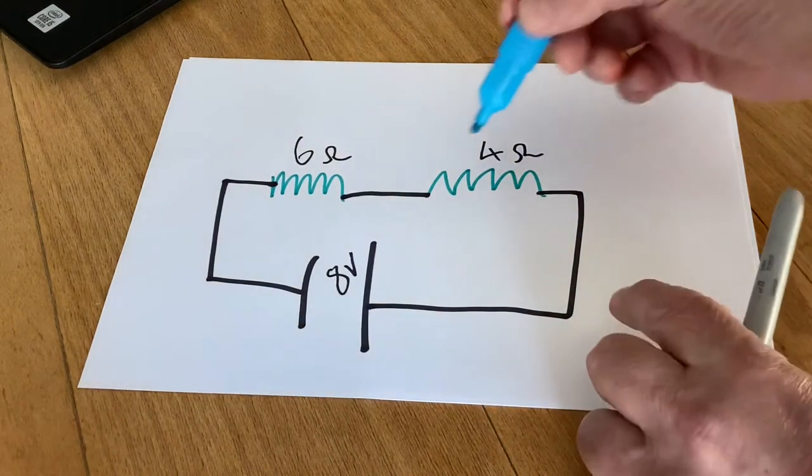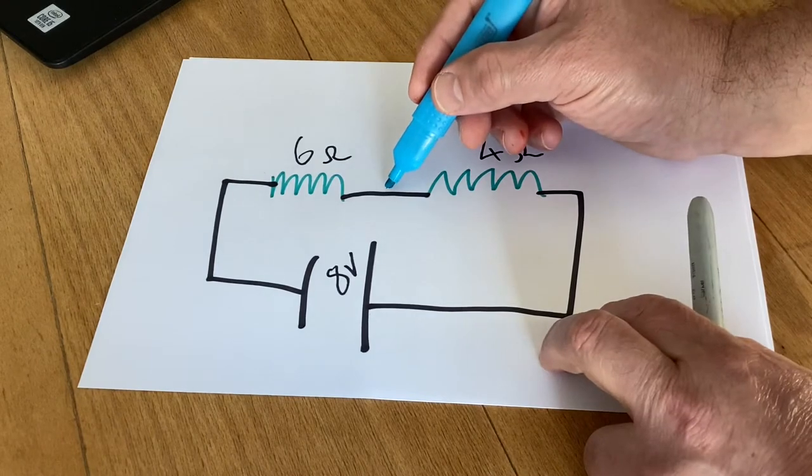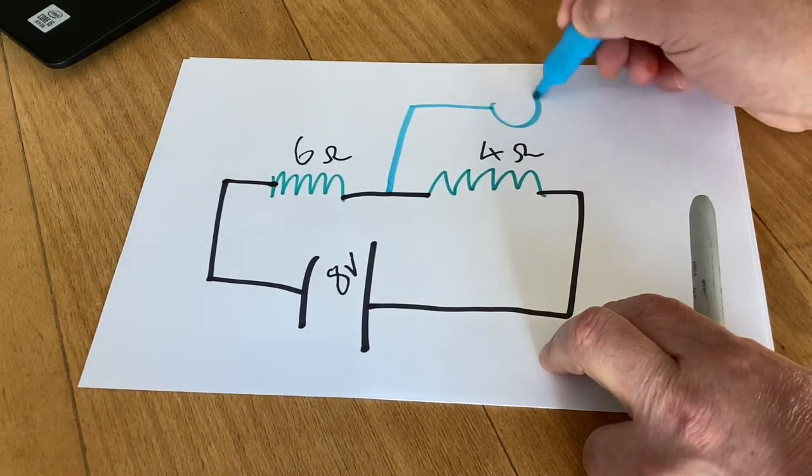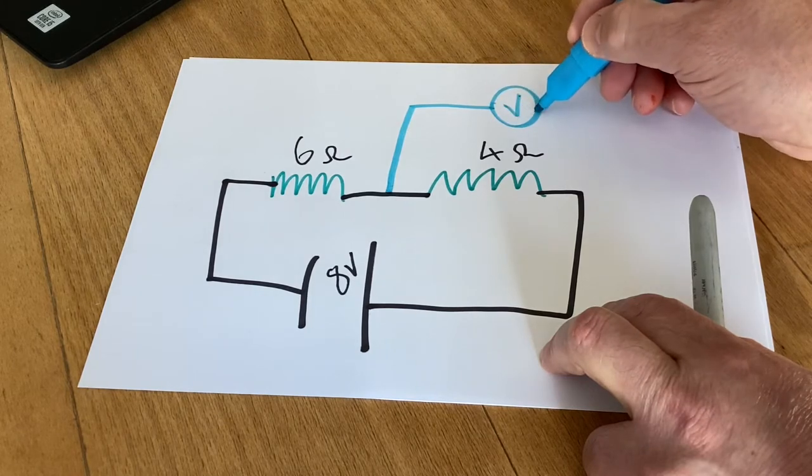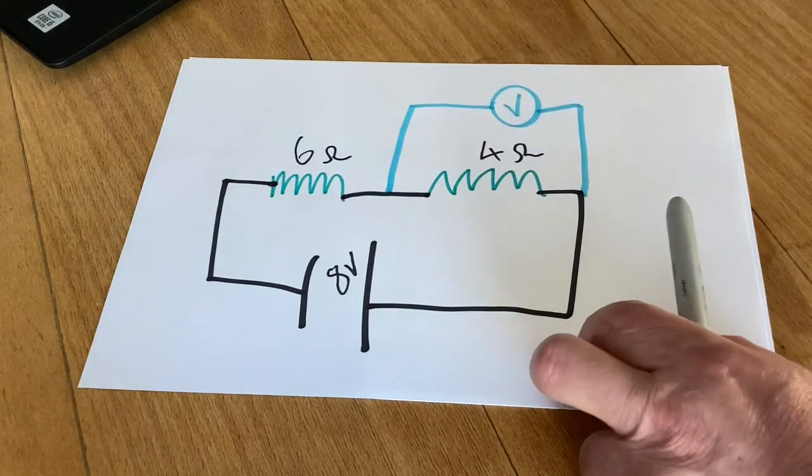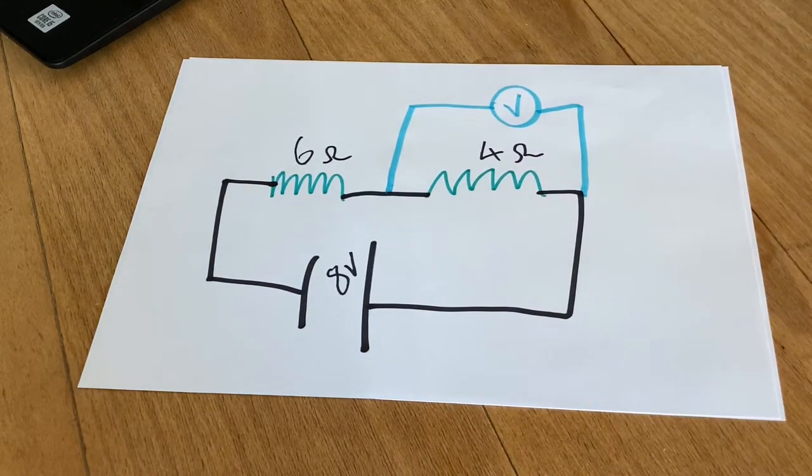The question asks, what would the volt drop be across this resistance? So if we were to connect a voltmeter in parallel to this resistor, what would it show on that voltmeter?